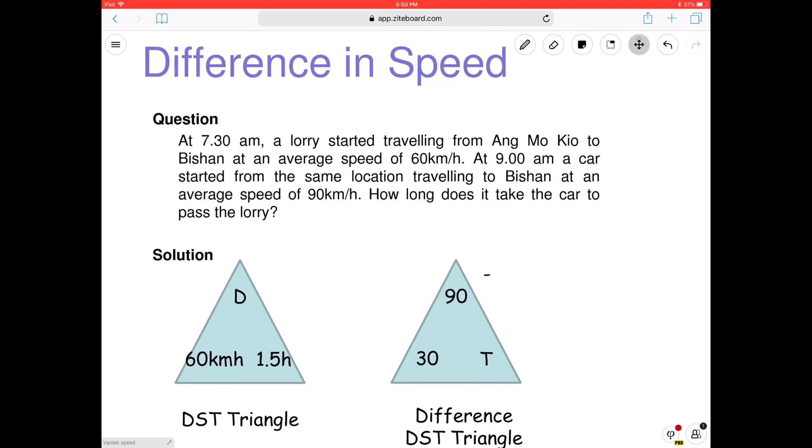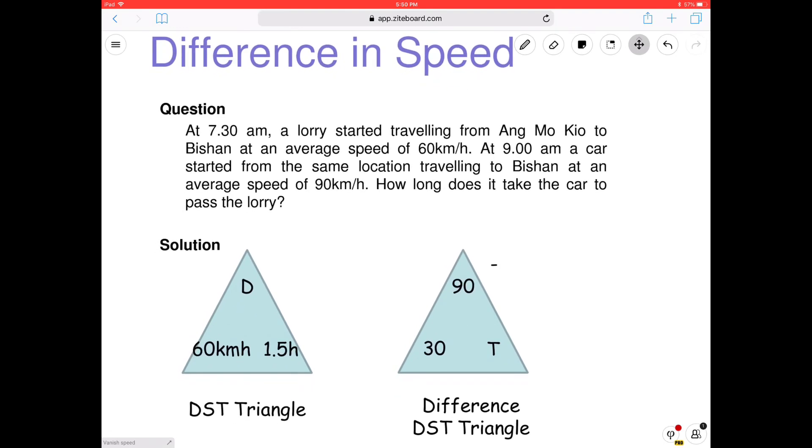So, for example, at 7:30 am, a lorry started travelling from Ang Mo Kio to Bishan at an average speed of 60. Then at 9, a car started from the same location travelling to Bishan at an average speed of 90. How long does it take the car to pass the lorry? Yeah. Right? Looks difficult, right? So let's draw and see how it looks like.